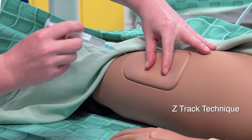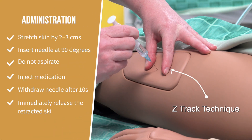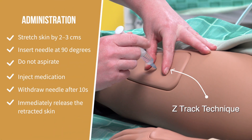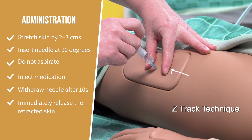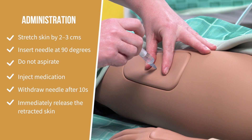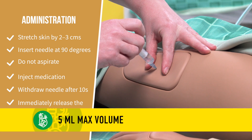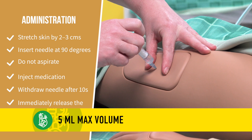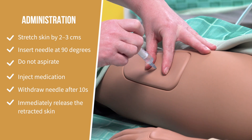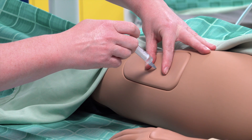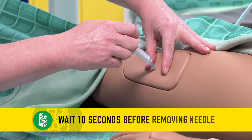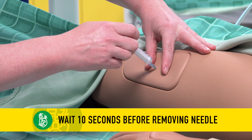Apply the Z-Track technique, stretching the skin by 2-3cm using your thumb and forefinger. Insert the needle using a dart-like action at a 90-degree angle. Do not aspirate. Depress the plunger and inject the drug slowly, 1ml per 10 seconds.